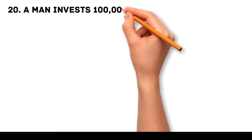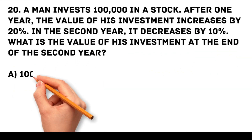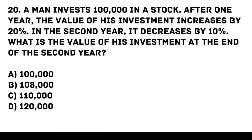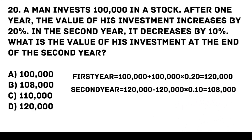Question 20. A man invests 100,000 pesos in a stock. After one year, the value of his investment increases by 20%. In the second year, it decreases by 10%. What is the value of his investment at the end of the second year? A. 100,000 pesos. B. 108,000 pesos. C. 110,000 pesos. D. 120,000 pesos. First, calculate the value of the investment after the first year. Next, calculate the value of the investment after the second year.